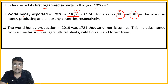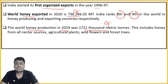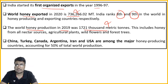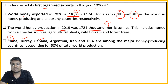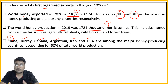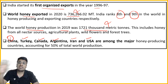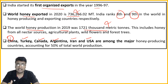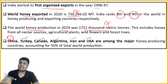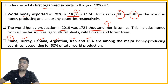World honey production - the sources are nectar plants, wildflowers, and forest trees. The top producers are: China, Turkey, Canada, Argentina, Iran, and US - these are the top 6. These 6 countries alone produce 50% of world honey. If asked which is the top honey producer, the answer is China. Multiple choice question: which country is the largest producer of honey? Answer is option A - China.